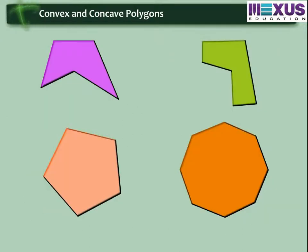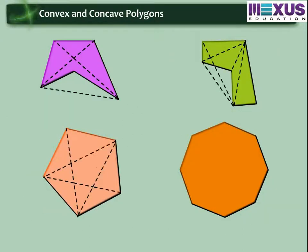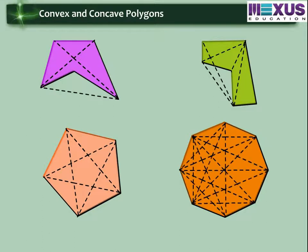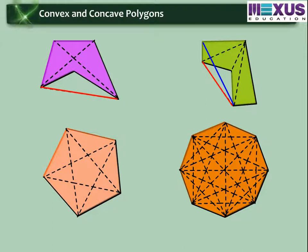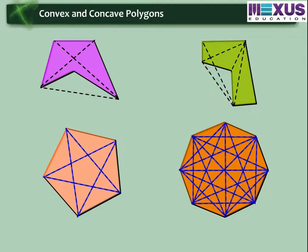Here are some other polygons. Can you draw diagonals for each? Let us do it. You will notice that for some polygons their diagonal lies in exterior of the polygon while others in its interior.